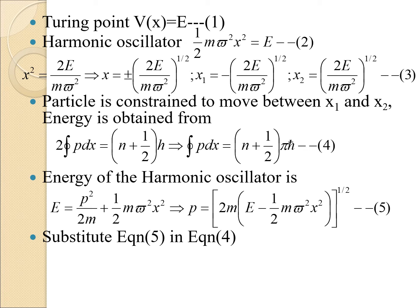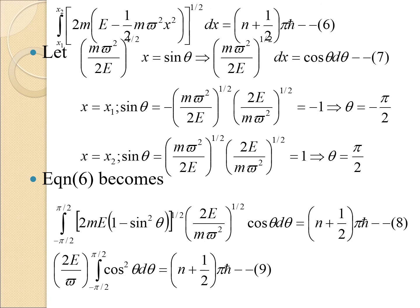Substituting the expression for p into the integral, we get: ∫(x₁ to x₂) [2m(E − ½mω²x²)]^(1/2) dx = (n + ½)πℏ. Now we apply the substitution: (mω²/2E)^(1/2) · x = sinθ, so differentiating gives (mω²/2E)^(1/2) dx = cosθ dθ.